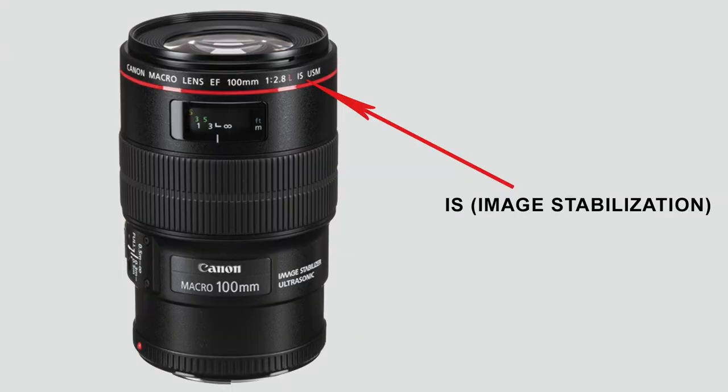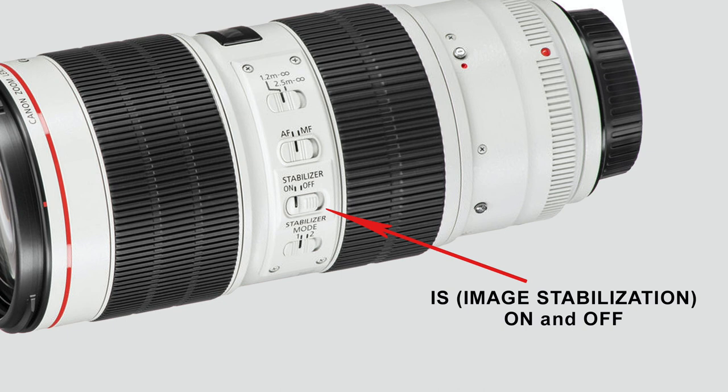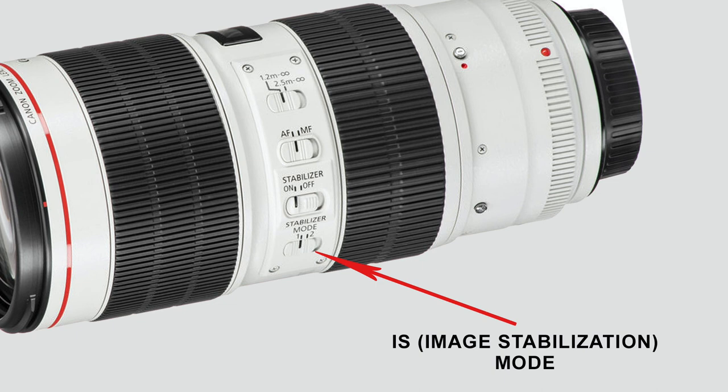In Canon lenses, you will also see IS in the lens name, and it will say image stabilization on the body. The same as with Nikon lenses, you can find a stabilization on/off switch. On some lenses, you can also find a switch for stabilizer mode — some lenses can have two modes, and some even three.